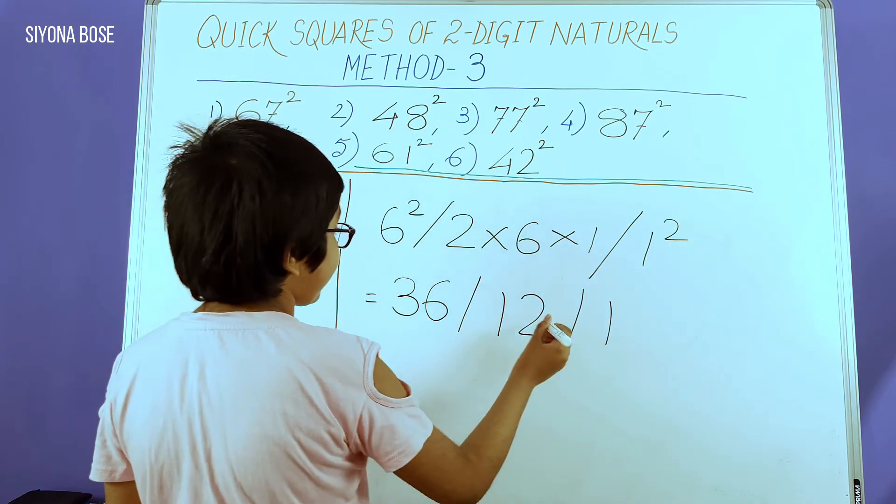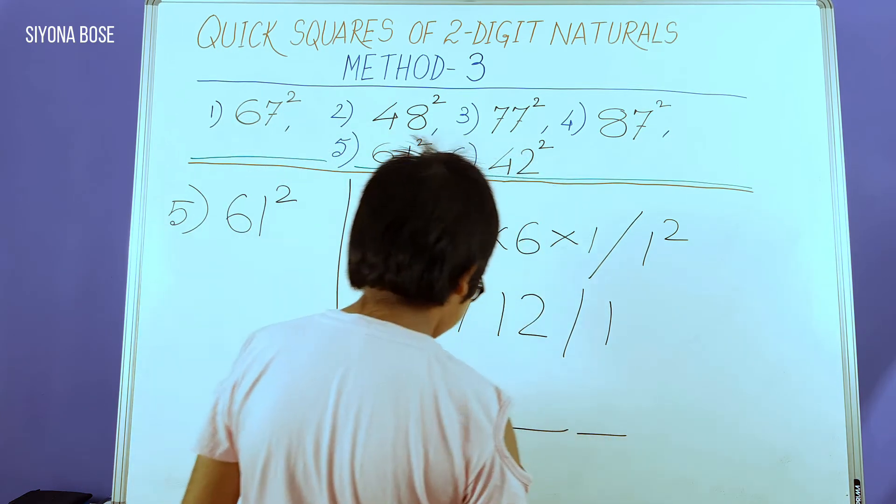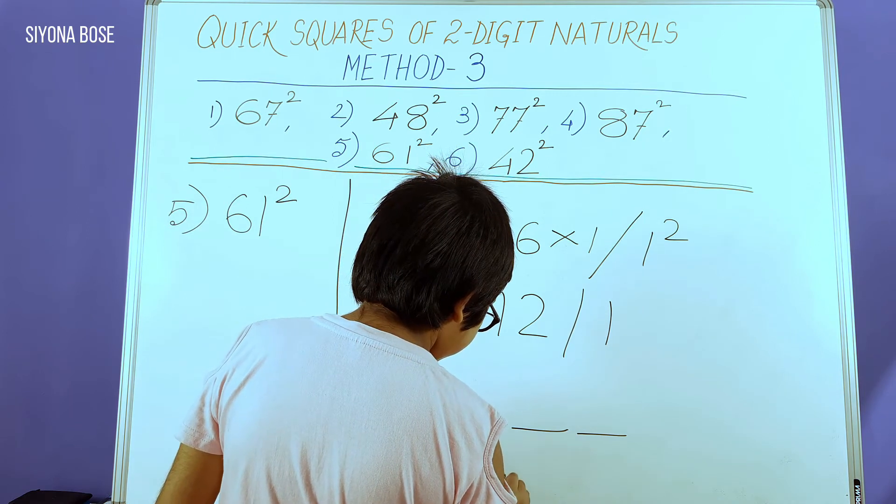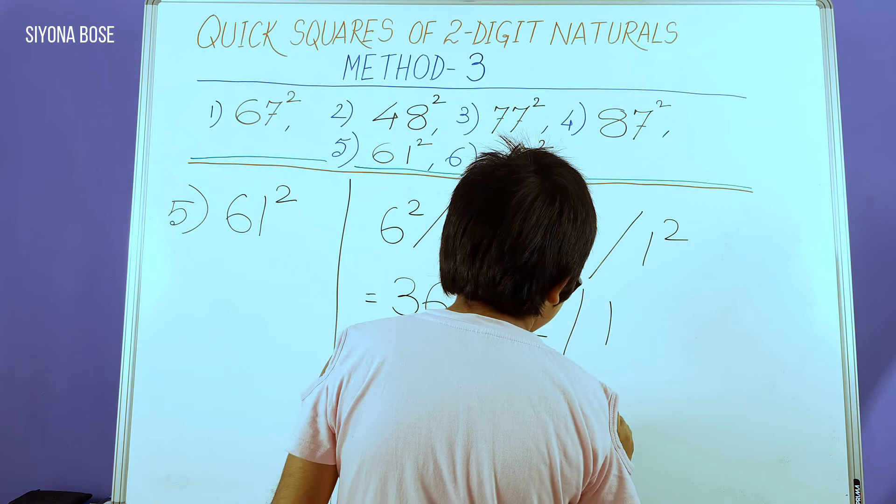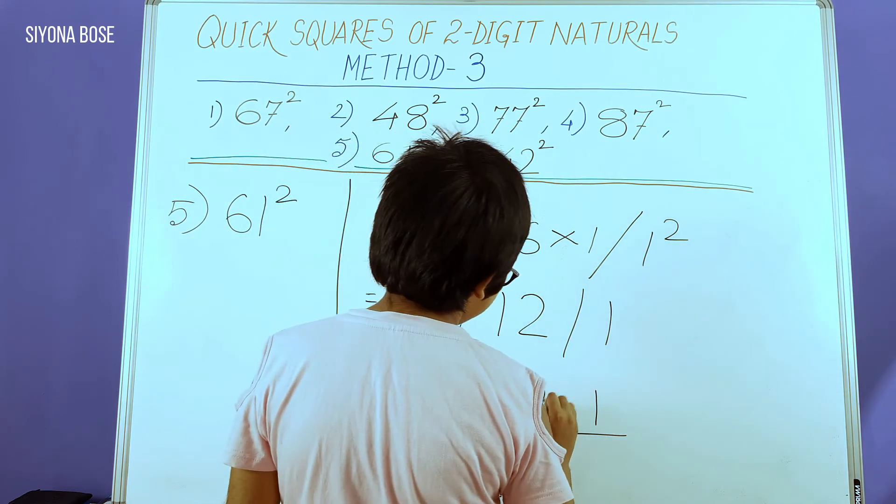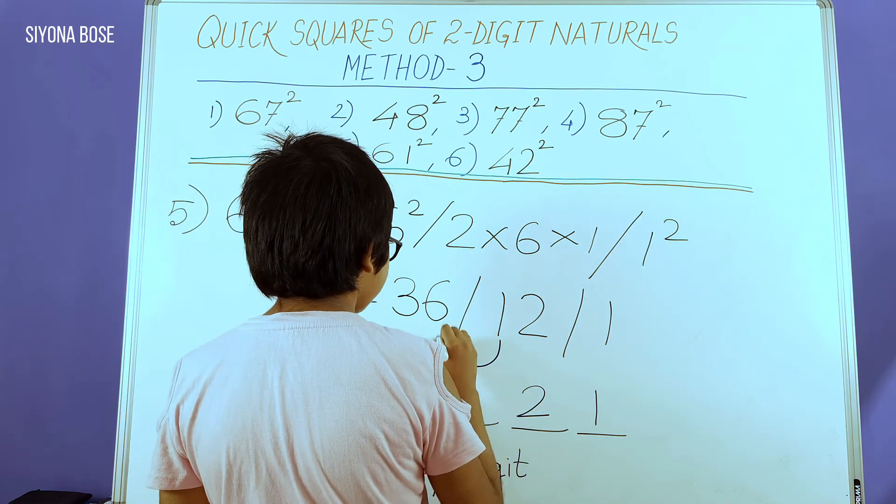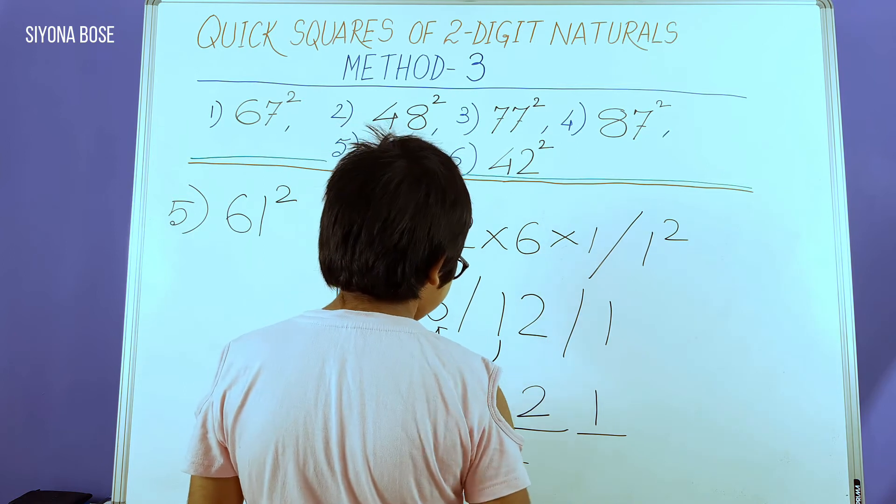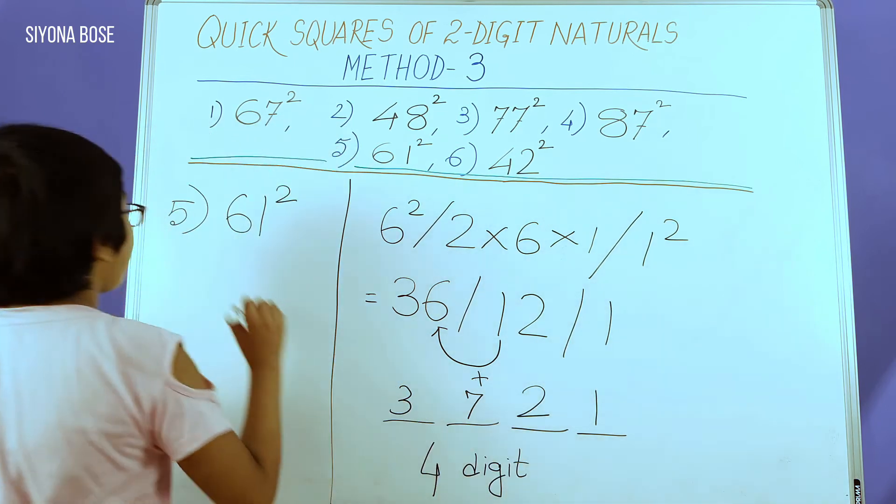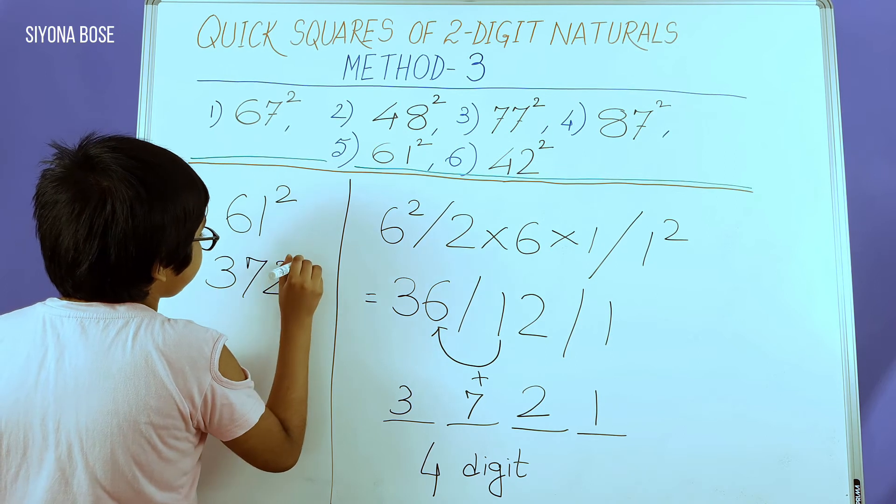We keep the 1. But since there's nothing to add to the 2, we keep the 2. Now we need to add this 1 to 36 to get 37. Ultimately, 61 squared is 3721.